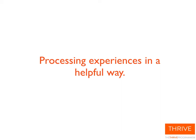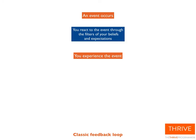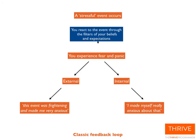Hi guys, this is Rob here. This short PowerPoint video is all about how we process experiences in a helpful way — not in a way that creates anxiety or a symptom, not in a way that maintains anxiety, but in a way that actually helps us overcome a particular symptom or anxiety. Looking at the standard model, the standard feedback loop: an event occurs, we react through the filters of our belief systems, thinking styles, and habitual reactions, then we experience the event.